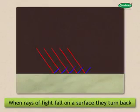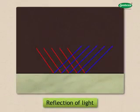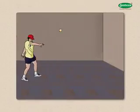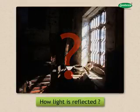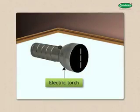When rays of light fall on a surface, they turn back. This is called the reflection of light. For example, a rubber ball hitting a wall is turned back — that is reflection of the ball. And let us see how light is reflected.